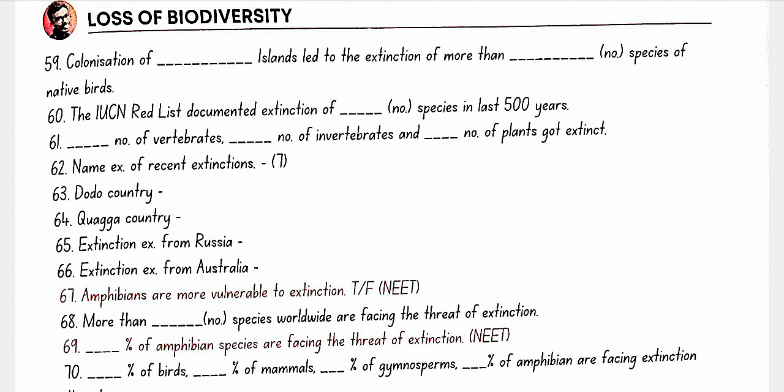Examples of recent extinctions include dodo (Mauritius), quagga (Africa), thylacine (Australia), Steller's sea cow (Russia), and three subspecies of tiger — Bali, Javan, and Caspian. Amphibians are more vulnerable to extinction — true.